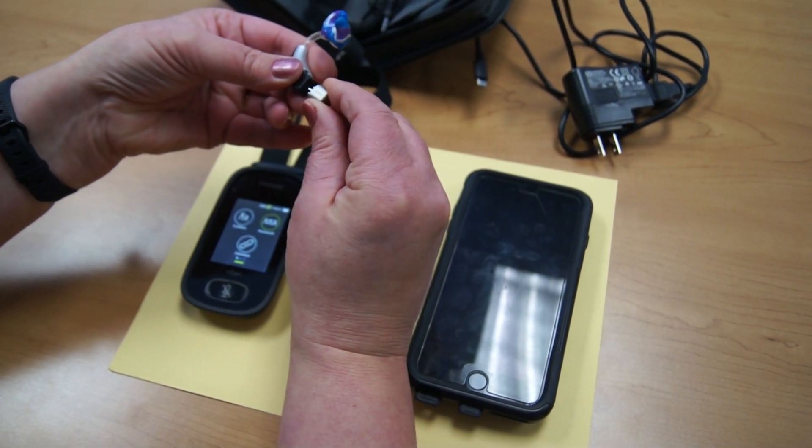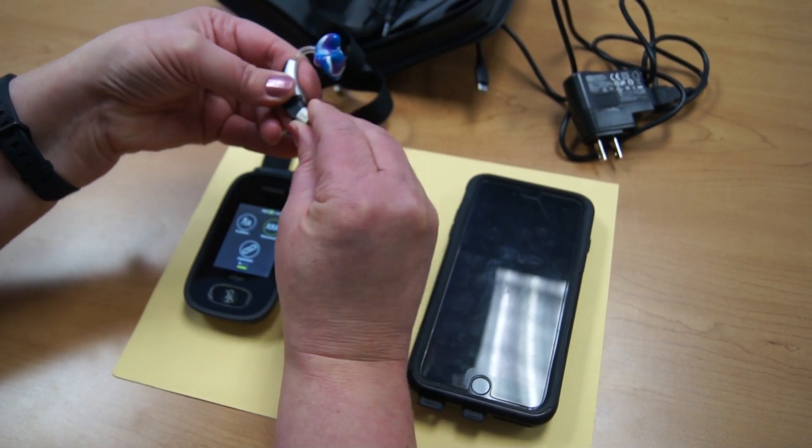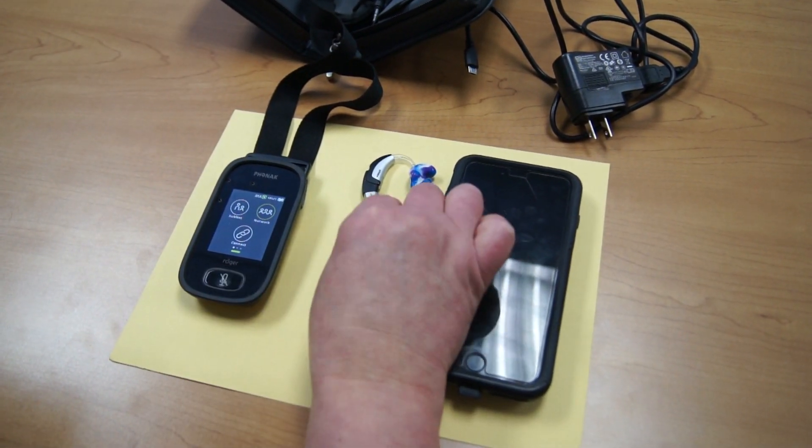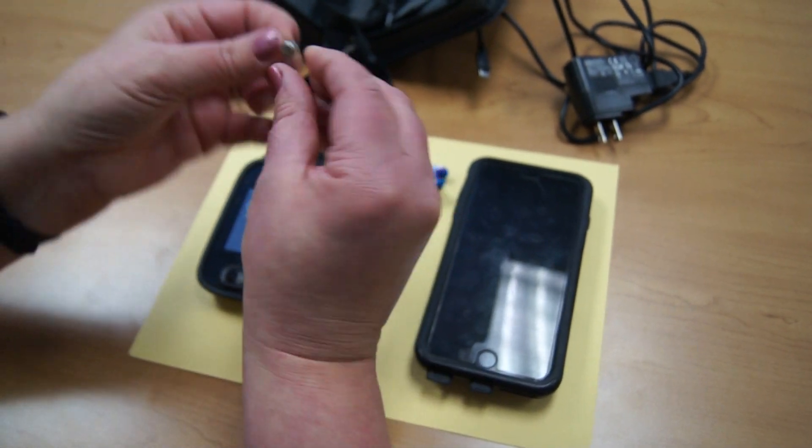This is a Roger X and connects to a hearing aid. You want to make sure that you have a fresh battery to start. Once you take a battery out of the pack, you're going to take the sticker off.